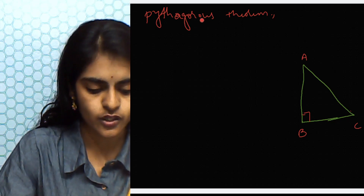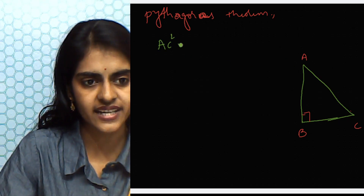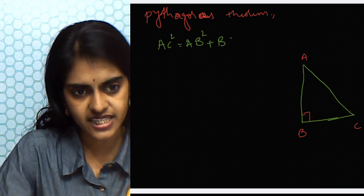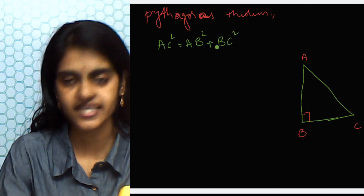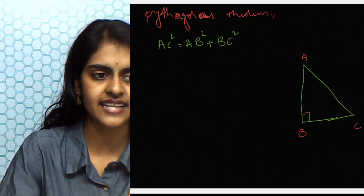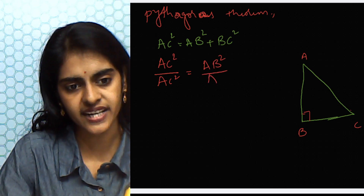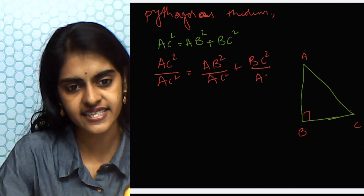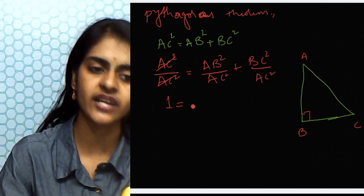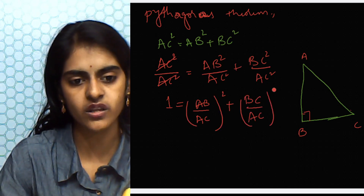Now let us divide this entire equation by AC². Dividing throughout by AC², we get: AC²/AC² = AB²/AC² + BC²/AC². AC² cancels on the left giving 1, and we can write this as 1 = (AB/AC)² + (BC/AC)².